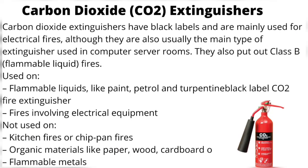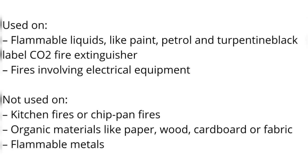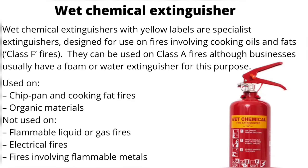Carbon dioxide (CO2) extinguishers have black labels and are mainly used for electrical fires, and are also usually the main type of extinguisher used in computer server rooms. They also put out Class B flammable liquid fires. Used on flammable liquids like paint and petrol, and fires involving electrical equipment. Not used on kitchen fires or chip pan fires, organic materials like paper, wood, cardboard, or fabric, or flammable metals.